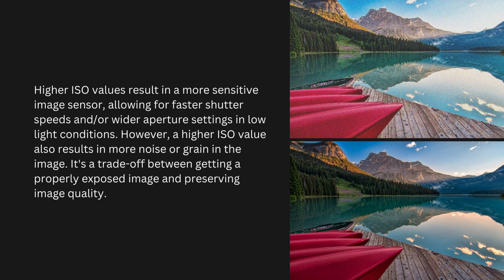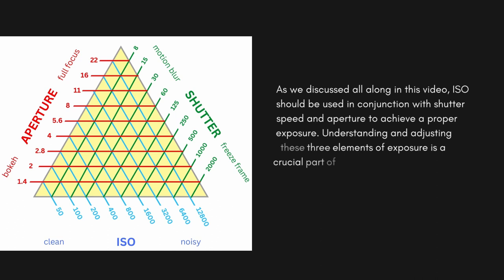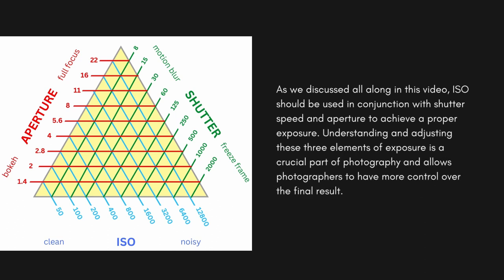Higher ISO values result in a more sensitive image sensor, allowing for faster shutter speeds and/or wider aperture settings in low-light conditions. However, a higher ISO value also results in more noise or grain in the image — it's a trade-off between getting a properly exposed image and preserving image quality. ISO should be used in conjunction with shutter speed and aperture to achieve proper exposure. Understanding and adjusting these three elements of exposure is a crucial part of photography and allows photographers to have more control over the final result.